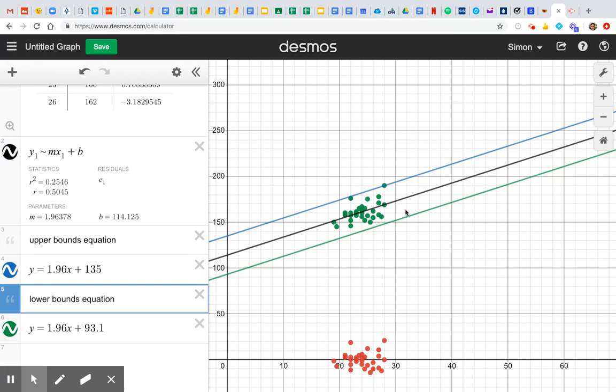So if I wanted to talk about how tall would somebody with a forearm of 40 centimeters be, then it's going to be somewhere between 171.5 and 213.4. And that's your last question on your quiz today.